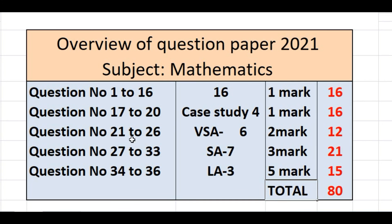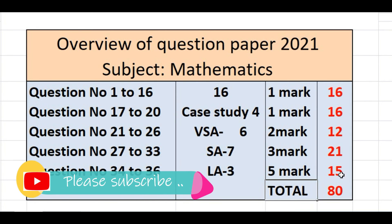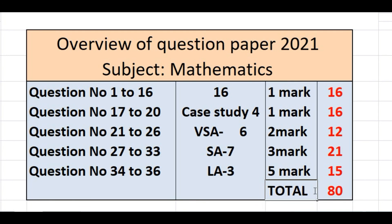Question numbers 21 to 26 will be for two marks — six questions for two marks. Questions 27 to 33 are three-mark short answer type — seven questions this year compared to eight last year, totaling 21 marks. Questions 34 to 36 are three questions for five marks each, totaling 15 marks. The total is 80 marks. Internal choices have also been introduced for each type of question. You can prepare well and plan according to this for your upcoming exam.